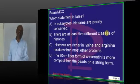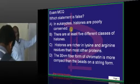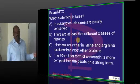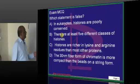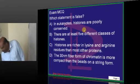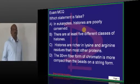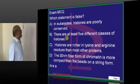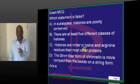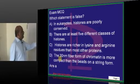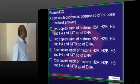What is the wrong statement? In eukaryotes, histones are well conserved, not poorly conserved. There are at least 5 different classes of histones. Histones are rich in lysine and arginine — two amino acids. The DNA is organized in a beads-on-a-string form called the nucleosome.